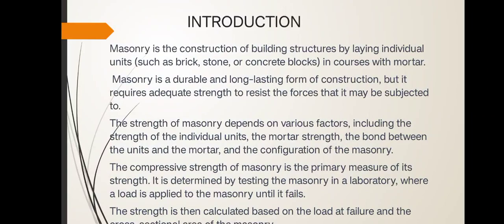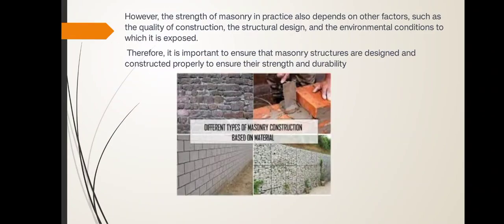The configuration of masonry also matters. The compressive strength of masonry is the primary measure of its strength. It is determined by testing masonry in the laboratory, where a load is applied to the masonry until it fails, and the strength is calculated based on the load at failure. The strength of masonry in practice also depends on factors such as quality of construction, structural design, and environmental conditions to which it is exposed.